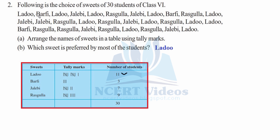Similarly for burphy: we find it one time, second time, and a third time — no further occurrences, so burphy appears 3 times in the data.